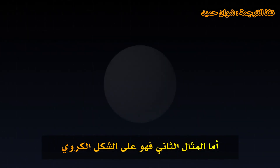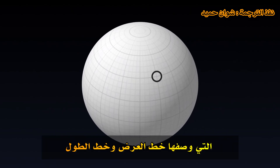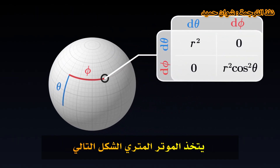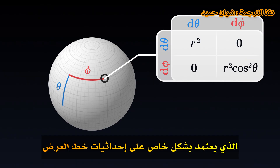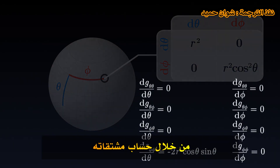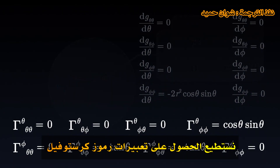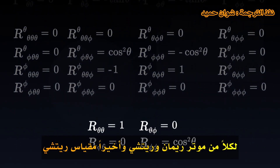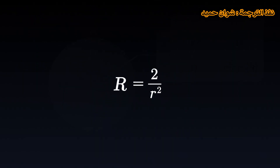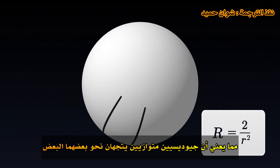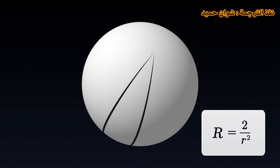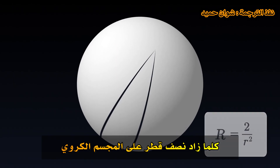The second example is that of a sphere. At a point on the sphere, described by its latitude and longitude, the metric tensor takes the following form. This time, the metric tensor is not the same everywhere on the sphere — it depends in particular on the latitude coordinate. By calculating its derivatives, we can obtain the expressions of the Christoffel symbols, and from the Christoffel symbols, we can calculate the various components of the Riemann tensor, the Ricci tensor, and finally the Ricci scalar. On the surface of a sphere, the curvature is positive, which means that two parallel geodesics tend to approach each other. Furthermore, the curvature gets smaller as the radius of the sphere increases — the larger the sphere, the flatter its surface.